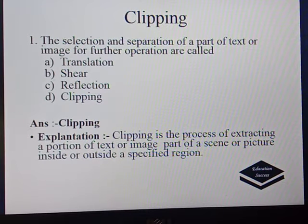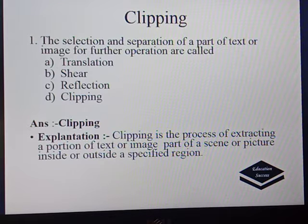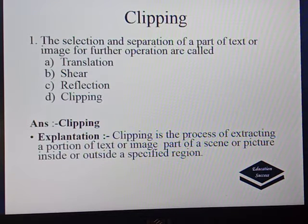First question: the selection and separation of a part of text or image for further operation are called translation, shear, reflection, or clipping. The answer is clipping because clipping is a process of extracting a portion of text or image, part of a scene or picture, inside or outside a specified region. We are deciding a region called the clipping window. Whatever is outside the clipping window, we extract and delete it; whatever is inside the window, we save it.